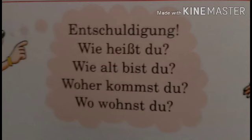The next word is very difficult to pronounce, so listen carefully: 'Entschuldigung,' which means excuse me. 'Entschuldigung, wie heißt du?' — 'du' is the informal you, meaning 'tum' — so 'How are you called?' or 'What is your name?' The next sentence: 'Wie alt bist du?' — How old are you?